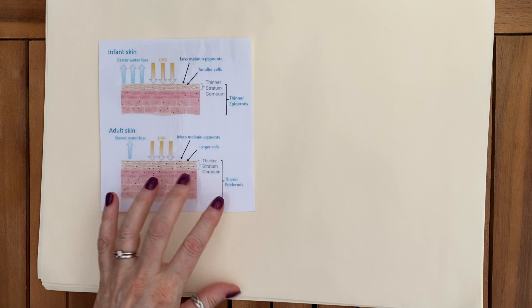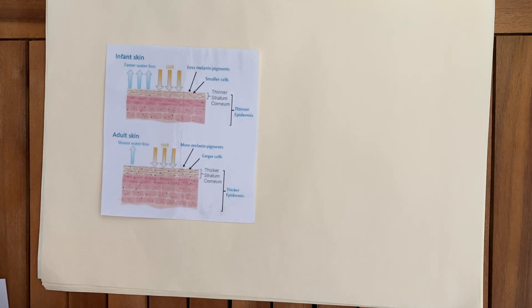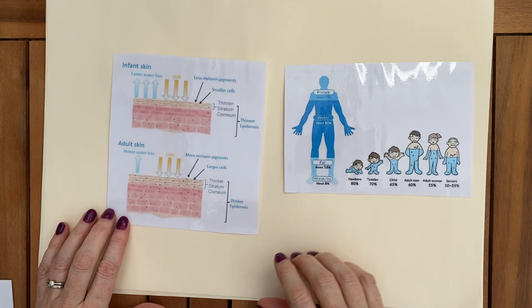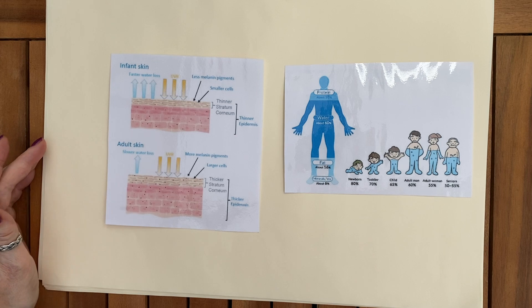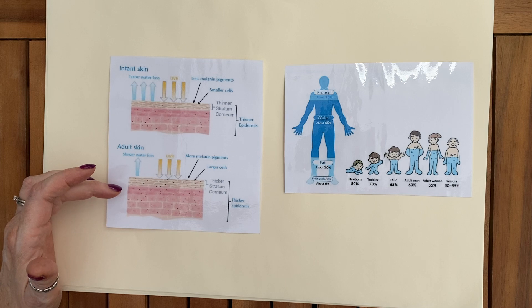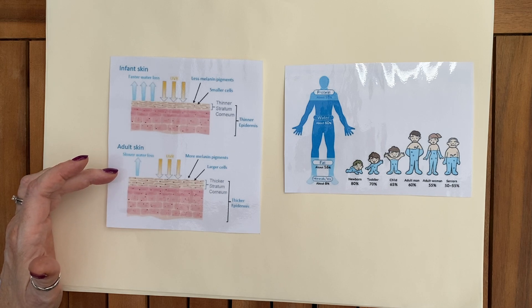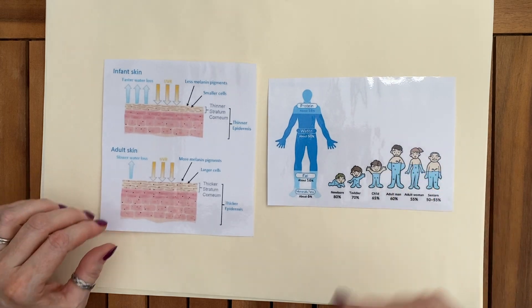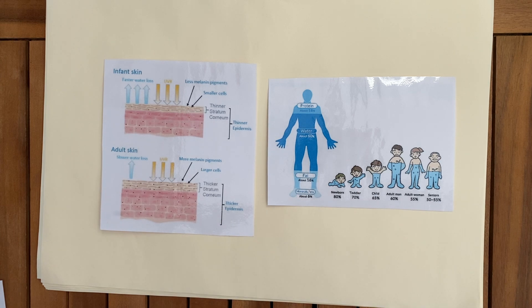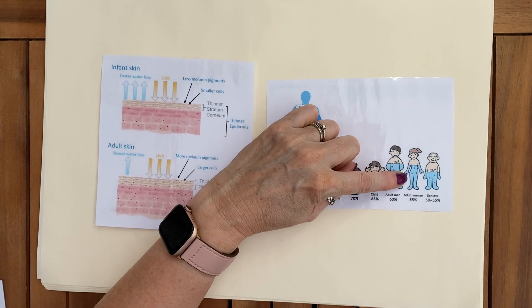Children get dehydrated quicker than adults because their skin loses water faster and sunburns more quickly, which is another fluid loss. Adult skin has different layers with different thicknesses and a slower water loss. If you're working with children in health and social care, it is important that they remain hydrated. Children also have a higher proportion of skin surface area relative to their body, putting them at greater risk of dehydration.